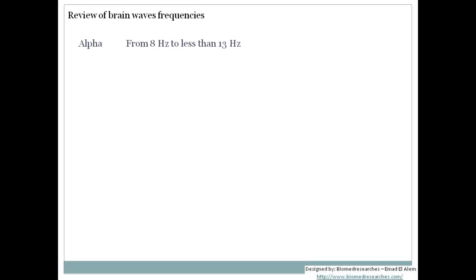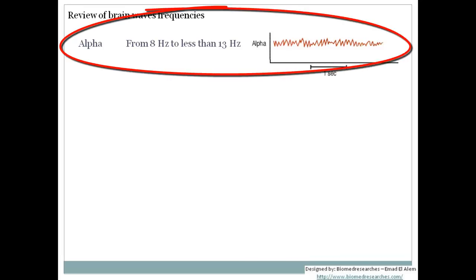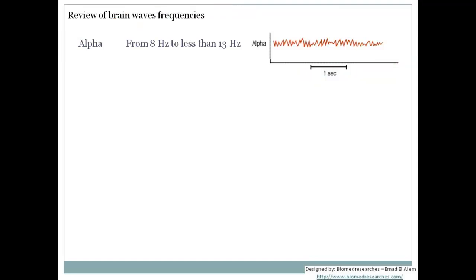Let us review back what are the four brain waves which we have learned earlier. We will just have a quick review. For the brain waves, we will have the alpha brain wave which is from 8 Hz to less than 13 Hz. As we can see here, this is an example of alpha brain waves and this is one second. If we count the waves between this one second, we will have waves between 8 and 13 Hz.